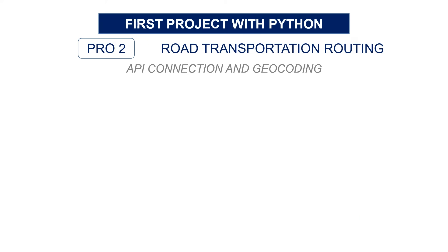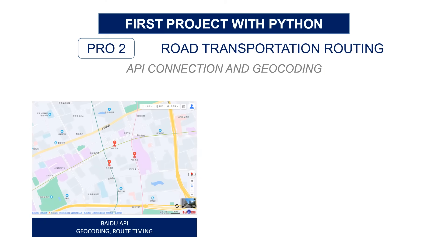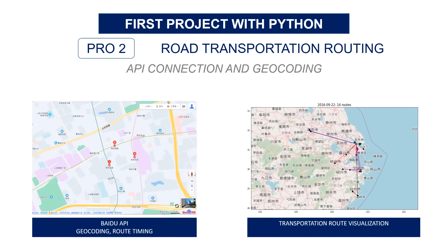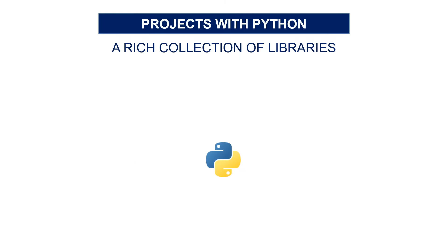This started my learning journey. As soon as I faced an issue, I was trying to figure out a solution using Python. For another project, I used it to optimize routing for store deliveries — connecting to the Baidu API, which is the equivalent of Chinese Google, for geocoding and route timing, and also to generate nice visualizations to analyze deliveries and optimize routes for cost reduction. With Python, I got access to a rich collection of libraries that improved my productivity and capacity to solve operational issues.